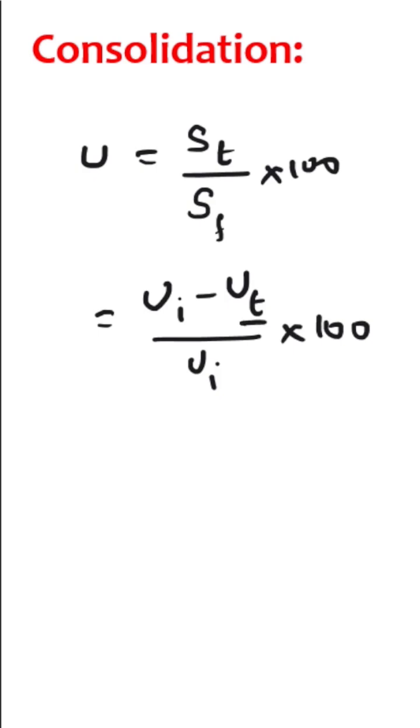If u is less than or equal to 60 percent, then time factor is given by the formula pi by 4 u squared.